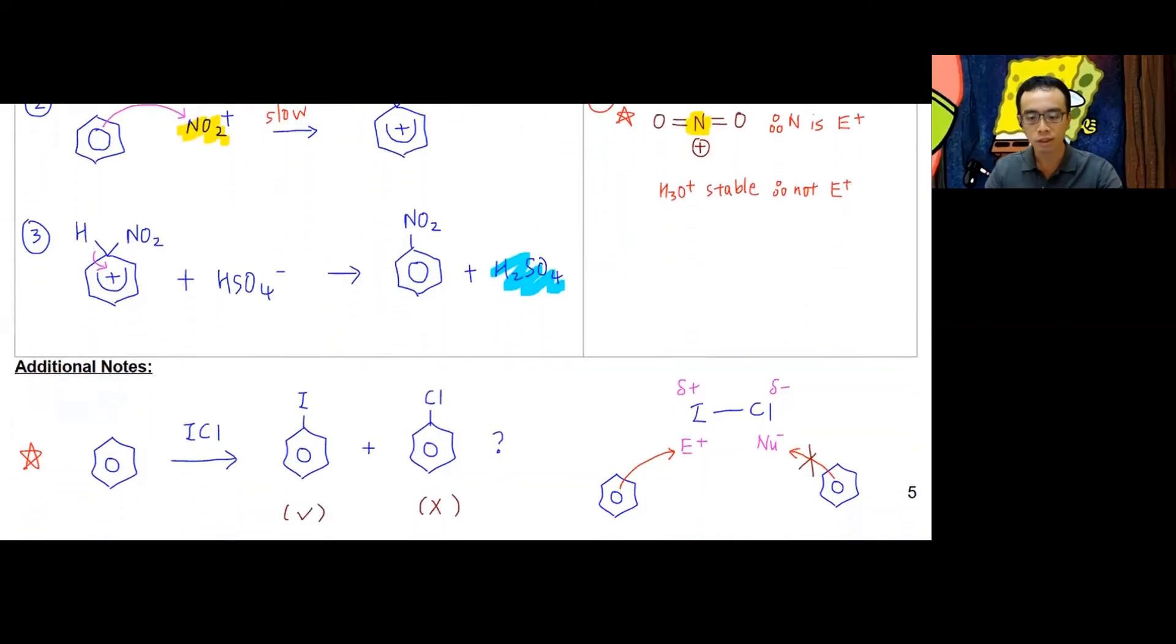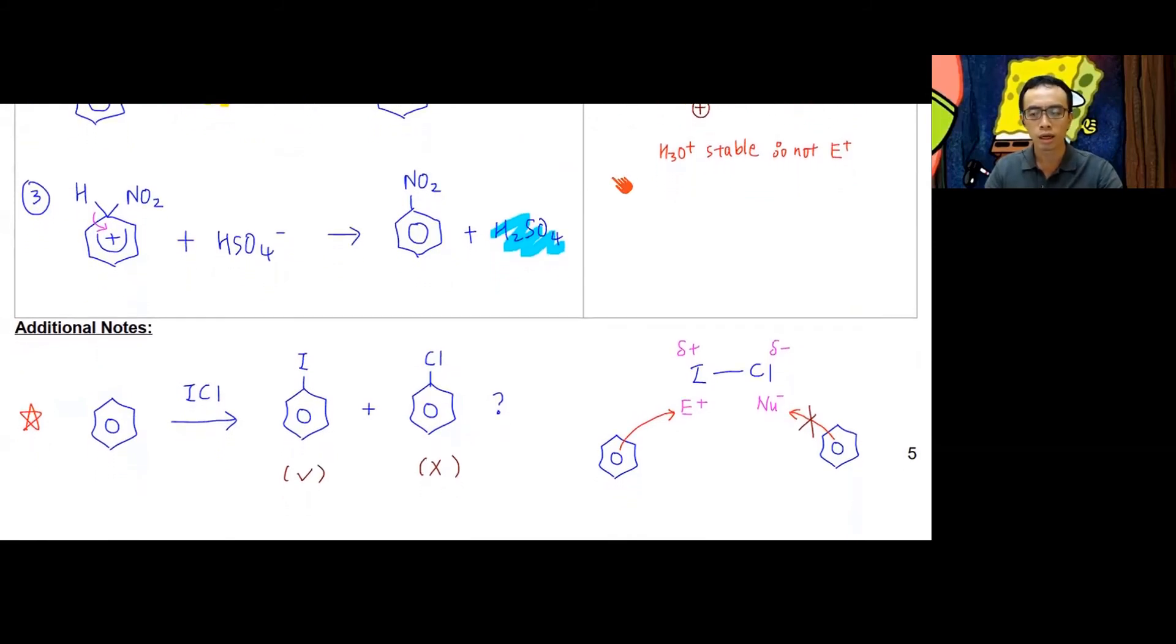Otherwise, mechanism-wise for electrophilic substitution is pretty simple. Now, one very simple comparison we want to talk about: if I have benzene and I react this with ICl, then can it form iodobenzene as well as chlorobenzene? What are the considerations we need to take to decide which product is possible and which is not possible?